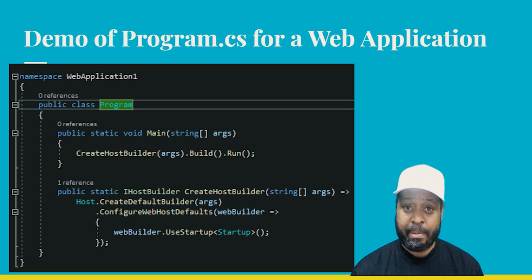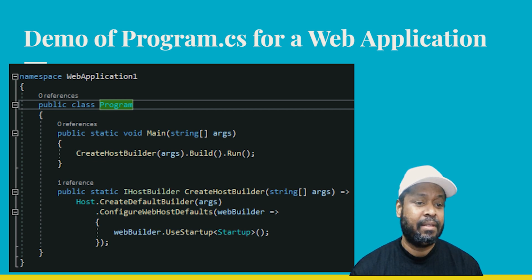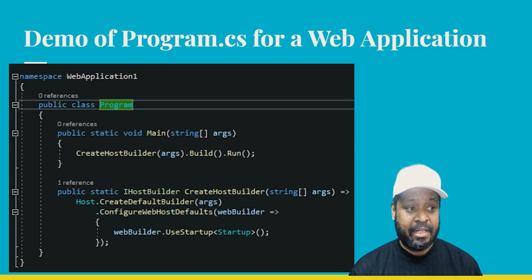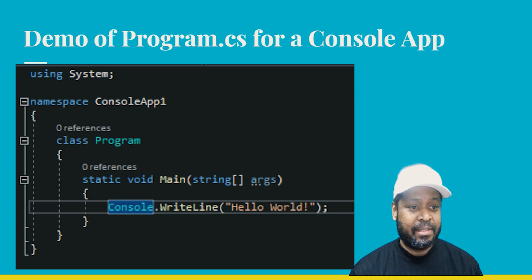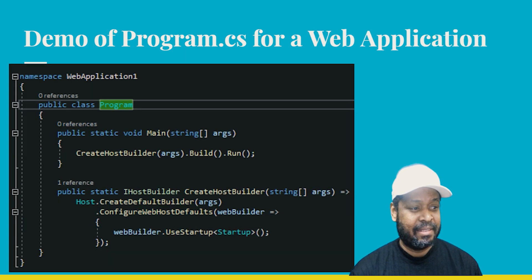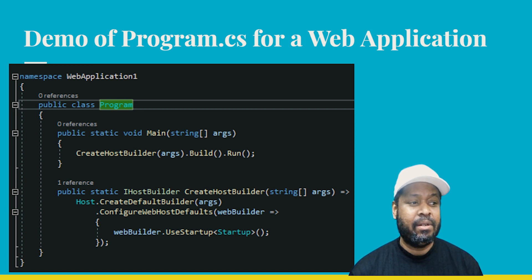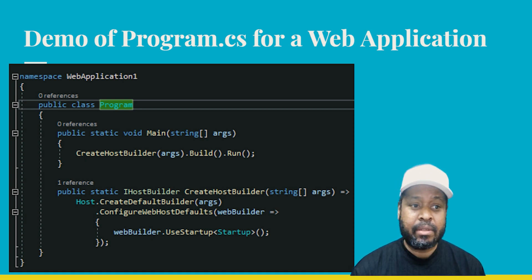Now we're going to take a look at what the web app program.cs looks like when it's auto-generated from the template. There's the program class and there's the main method. The main method has something different, but it's still a console app. You can see the slight difference from the previous one. With that said, we have the CreateHostBuilder, and that CreateHostBuilder does something that extends it beyond just being a console app.